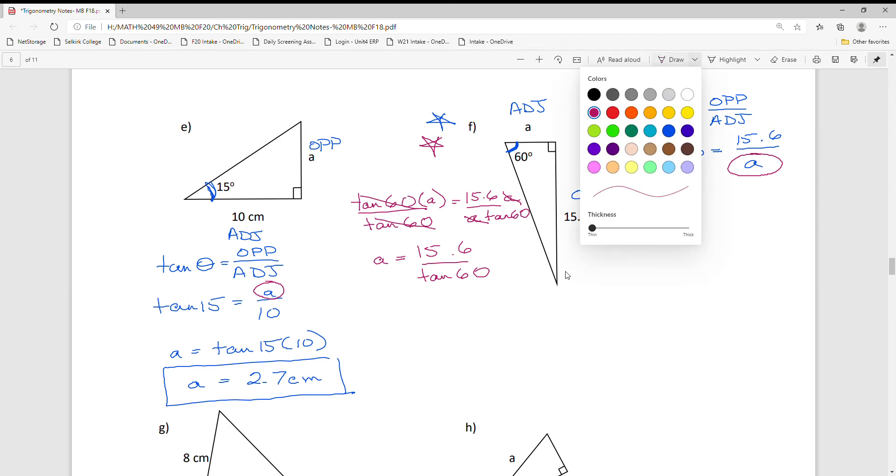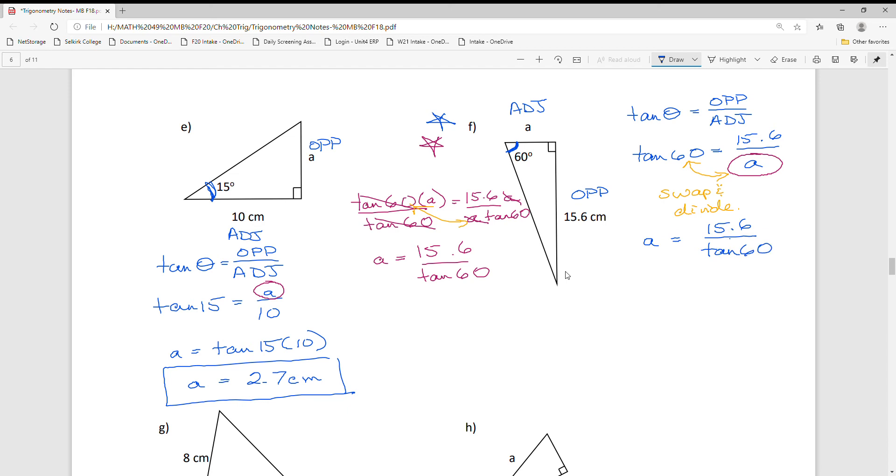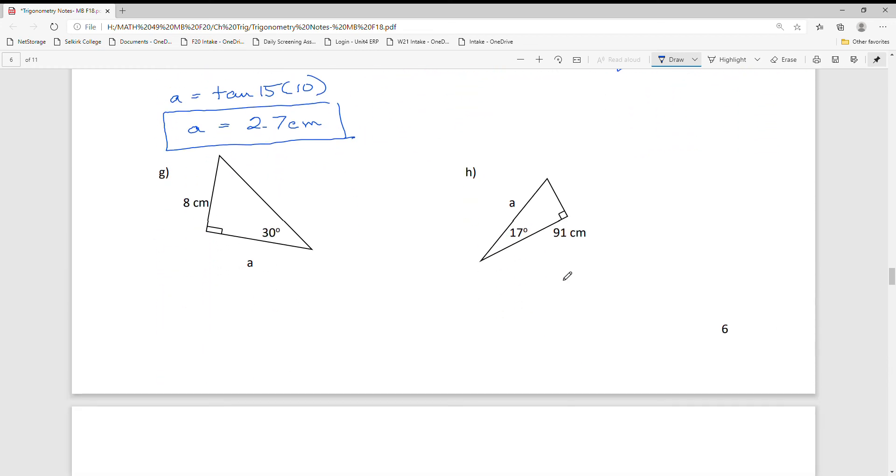I tend to give students a shortcut: in these ones, think swap and divide, because that's where you'll end up. Using this instead of showing all my algebra work, I simply write A equals 15.6 divided by tan 60. That shows my work for this swap and divide and gets me ready to put this into my calculator. This one's different, right? The calculator should come out to 9.0 centimeters. These two are good examples because they show how things can be different when the unknown is in the top versus the bottom.